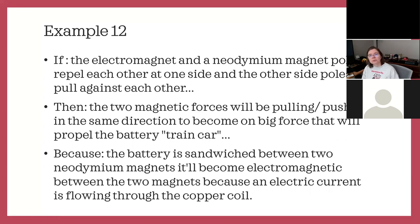Example twelve: if an electromagnet and neodymium magnet poles repel each other on one side and attract on the other, then the two magnetic forces pushing and pulling in the same direction will become a large force that propels a battery train car, because the electric current flows through a copper coil creating an electromagnet. This is a very interesting project — you're figuring out how to add different magnets to create something like a train car.